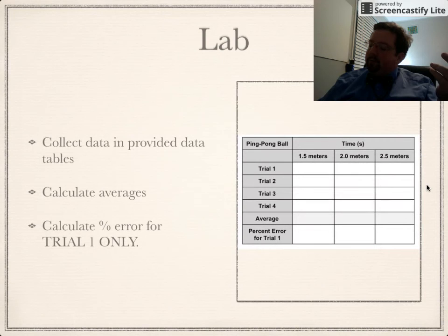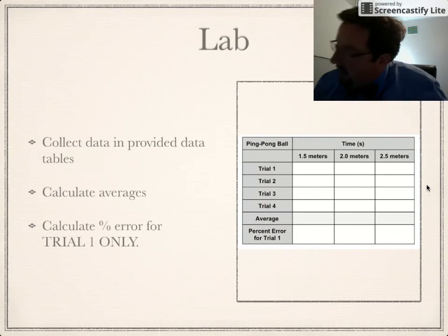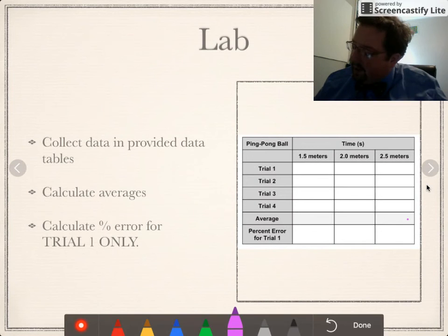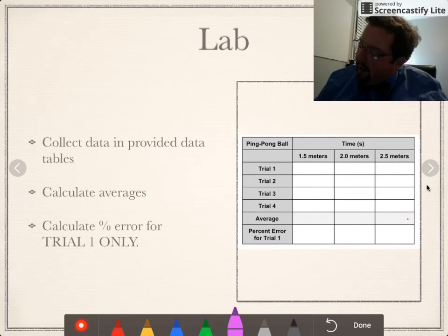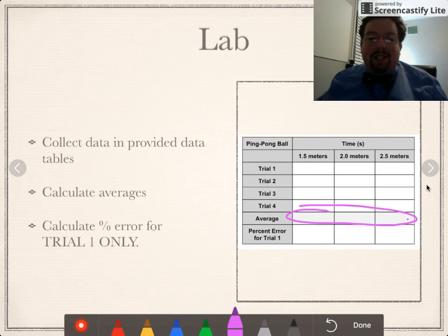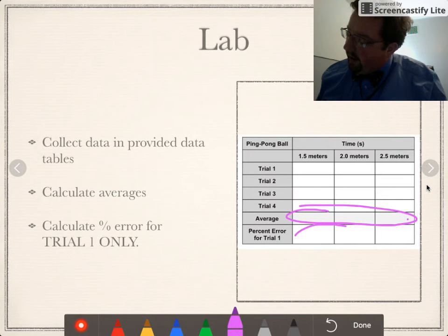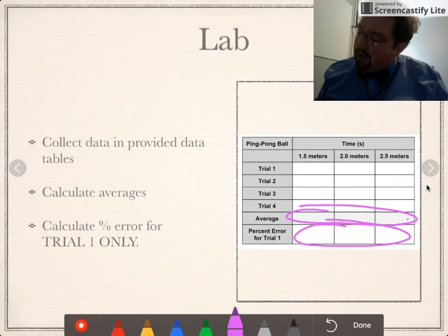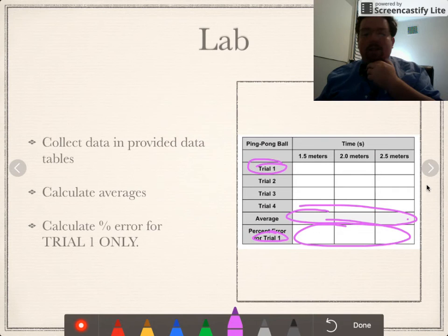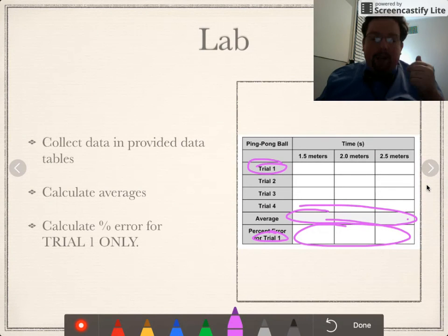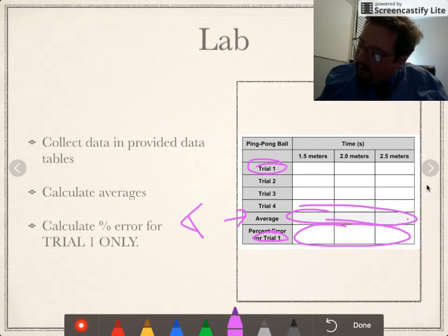Once you're done collecting data, start analyzing it. Calculate your averages for each column — that'll be six averages total, three for each ball. Then do a percent error for each column, but only for trial one. Use your average as the theoretical value and trial one as your experimental value.